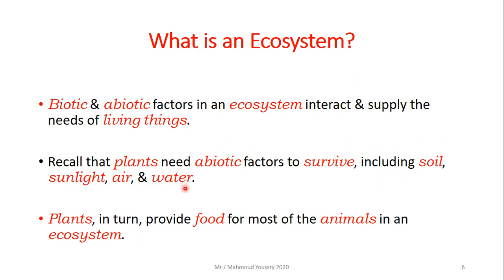Recall that plants need abiotic factors to survive, including soil, sunlight, air, and water. The plants need all these abiotic factors in order to survive. Also, the plants in turn provide food for most of the animals in an ecosystem.